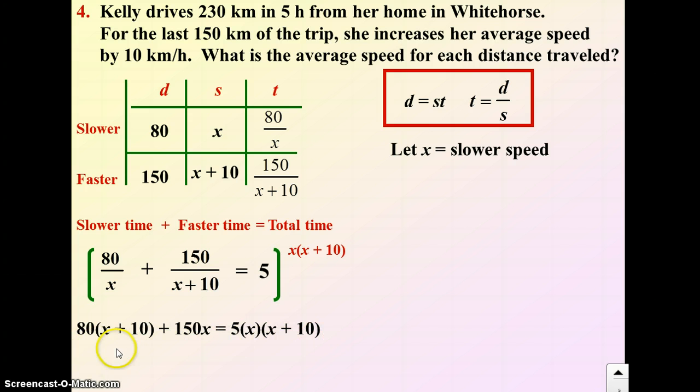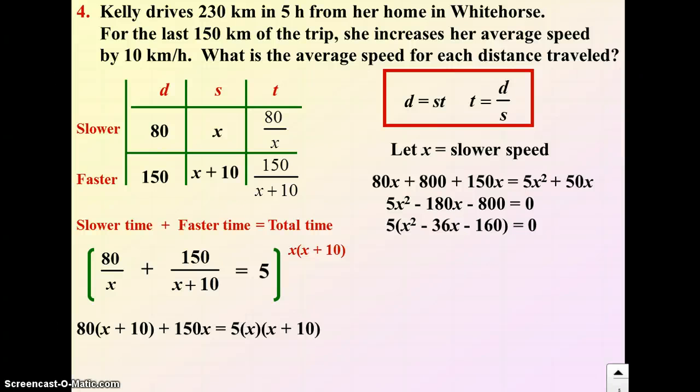So this is a quadratic equation. If I expand it out, combine like terms, and simplify: 80x plus 800 plus 150x equals 5x squared plus 50x. Set that equation equal to zero, and we could factor it. So again, we can solve this quadratic part any way we want. I'm going to solve it by factoring. Adds to negative 36, multiplies to negative 160: negative 40 and positive 4. So my solutions are x equals 40, x equals negative 4.